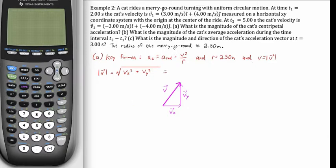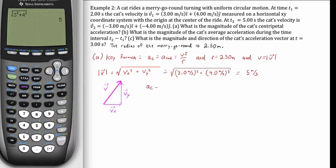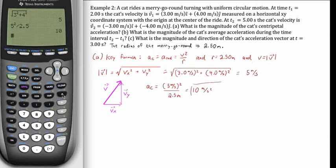So let's go back to calculating that magnitude, which can be calculated by taking the square root of 3 squared plus 4 squared, which, as you see on the calculator, gives us a value of 5 meters per second. Now we have our magnitude and we can proceed to get our first answer for part A. The centripetal acceleration is just going to be 5 meters per second quantity squared, divided by 2.5 meters, which gives us 5 squared divided by 2.5 — that's 10 meters per second squared. So there's our final answer for the magnitude and value of centripetal acceleration.